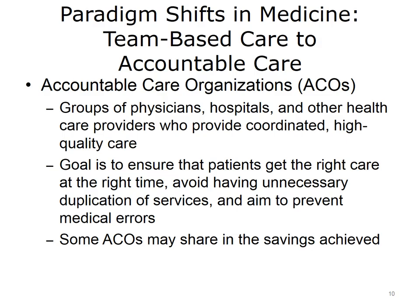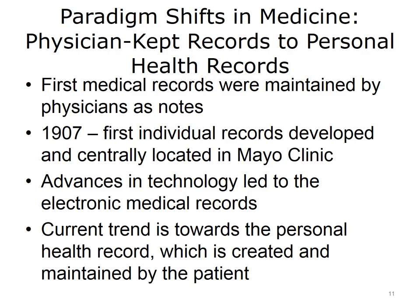With the passage of the Affordable Care Act came the concept of Accountable Care Organizations, or ACOs. These are groups of physicians, hospitals, and other healthcare providers who come together to provide coordinated, high-quality care. The goal of ACOs is to ensure that patients, especially the chronically ill, get the right care at the right time, while avoiding unnecessary duplication of services and aiming to prevent medical errors. Under some models, when an ACO succeeds in delivering high-quality care and spending healthcare dollars more wisely, it shares in the savings it achieves.